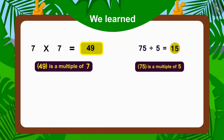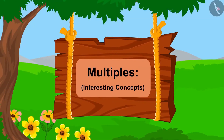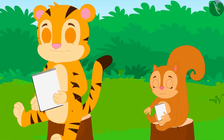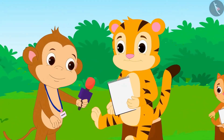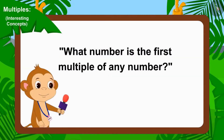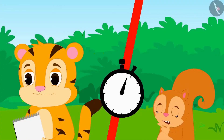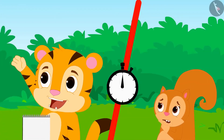Hello, children! In the last video, we learned about multiples through some fun examples. In this video, we will learn about some interesting concepts related to this. The competition 'Who is the smartest in Champapur' is going on. Sheer Khan and Chanda have reached the last round with equal scores. The organizer, Babban, posed this question: What number is the first multiple of any number? Sheer Khan gave the answer: that number itself.